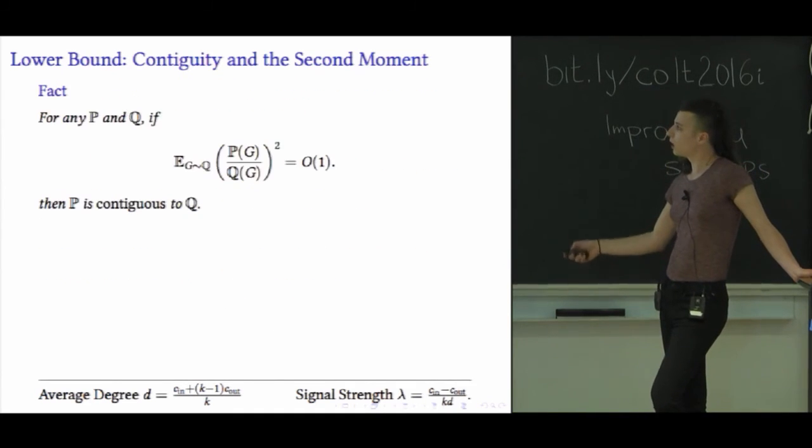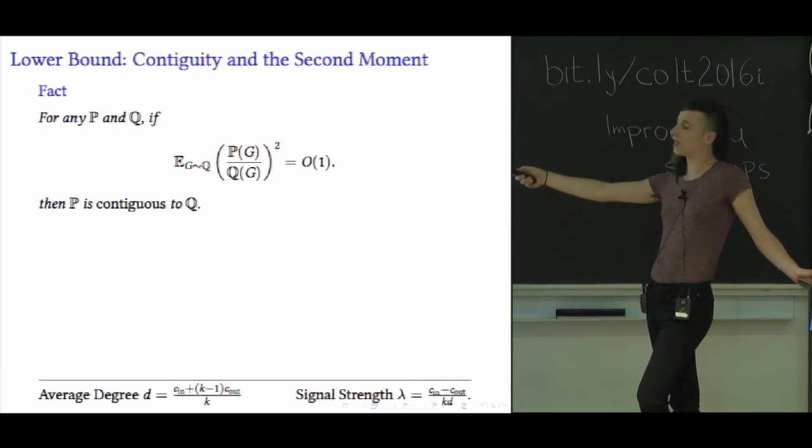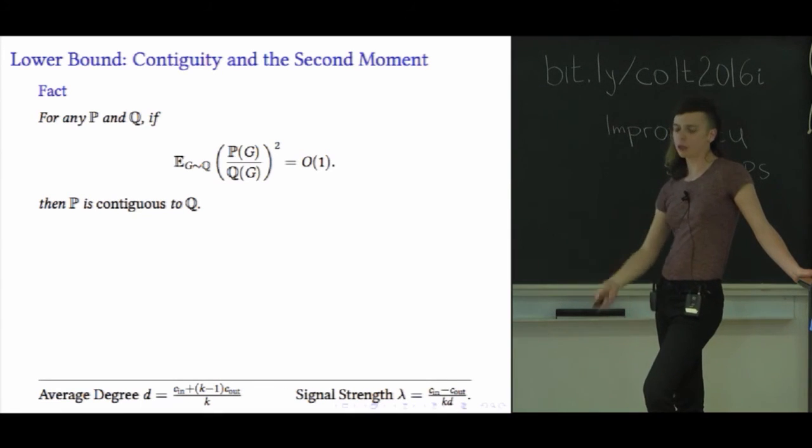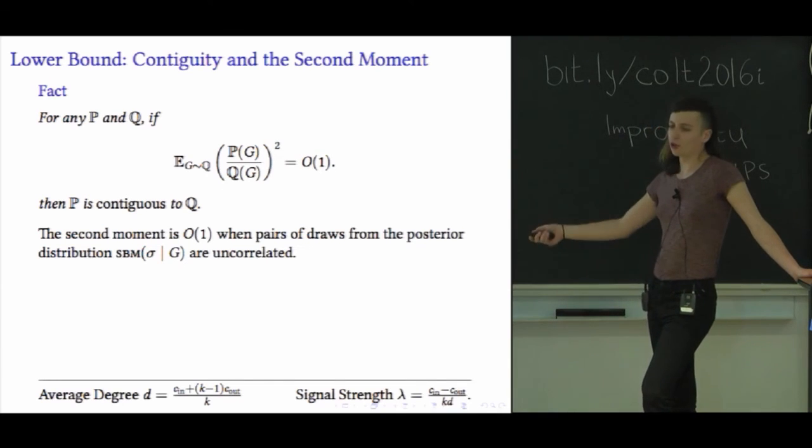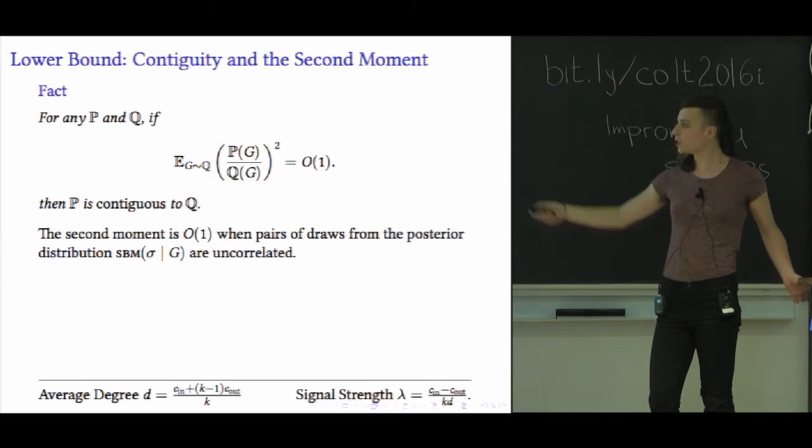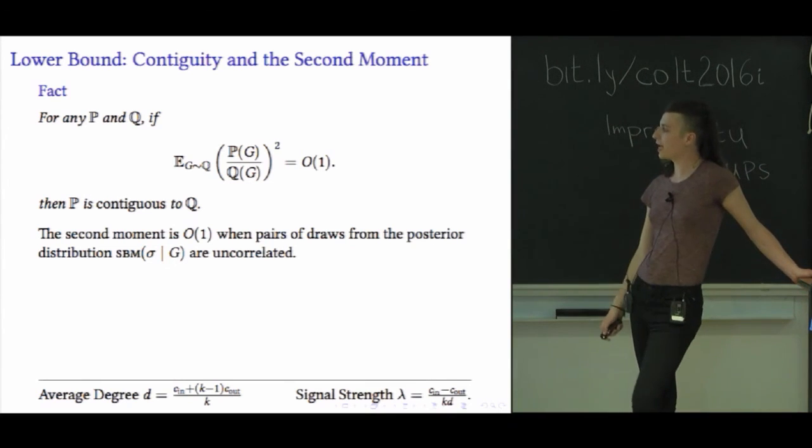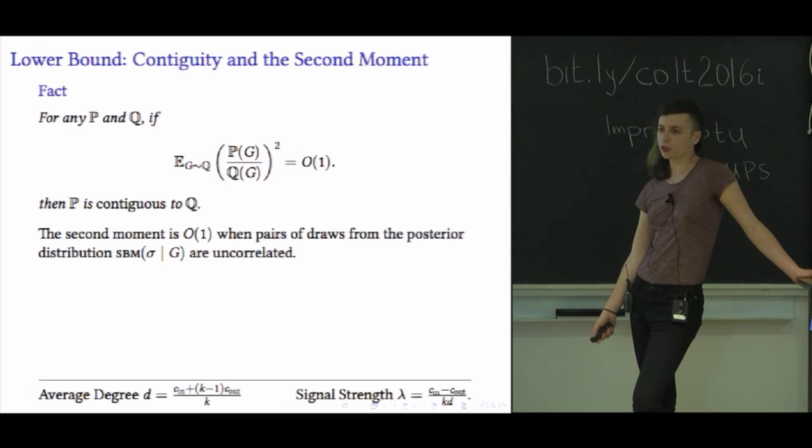The key lemma here is this nice fact that for any distributions P and Q, and again these are sequences of distributions, if this second moment of the likelihood ratio is order 1 as n gets large, then P is contiguous to Q. I'll leave it as an exercise to you, it's a one-line proof but it's very nice to work out for yourself. It's basically multiplying and dividing by things and then the Cauchy-Schwarz inequality. And now all you have to observe is that this second moment is order 1 whenever pairs of partitions from the posterior distribution are uncorrelated. So this is when the second moment stays order 1. You might be familiar with this from other similar second moment calculations.